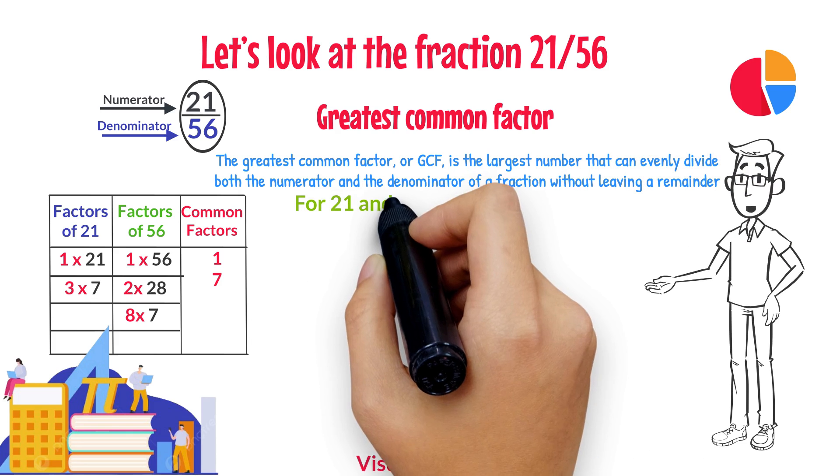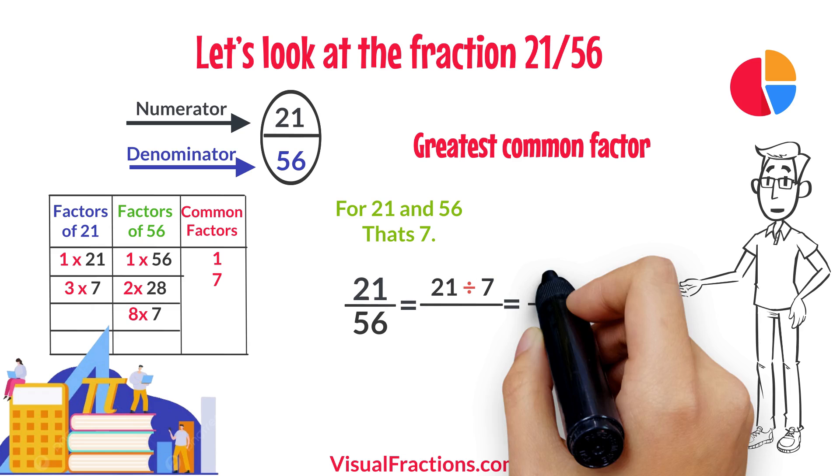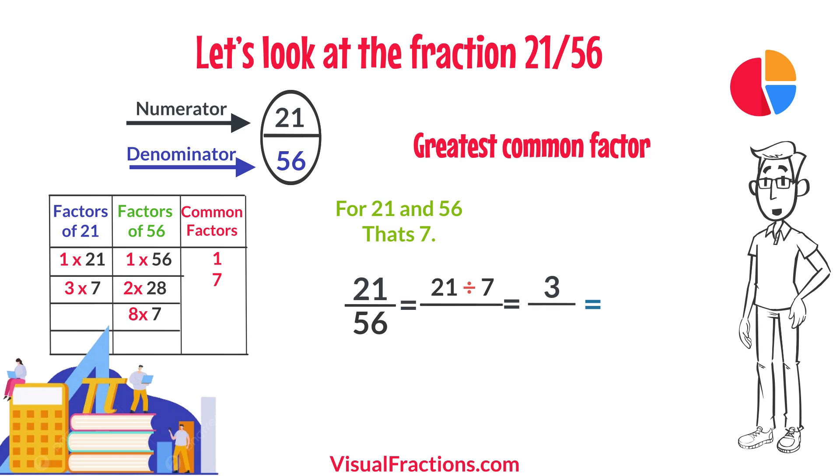For 21 and 56, that's 7. We start by dividing 21 by 7, which gives us 3. Then we divide 56 by 7, which results in 8.